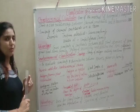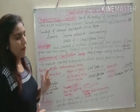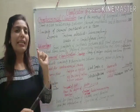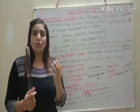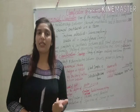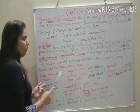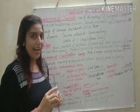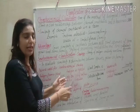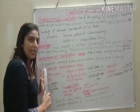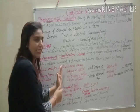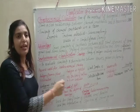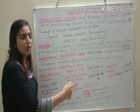How is sero-taxonomical study done? First, we take a plant called Plant A. We extract the antigens — that is, the proteins — from Plant A. After extracting the antigens and proteins, we inject them into rabbits or mice.